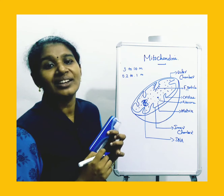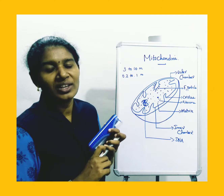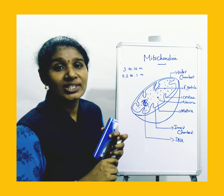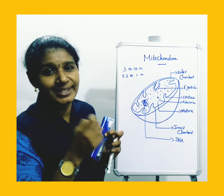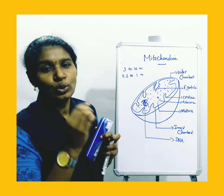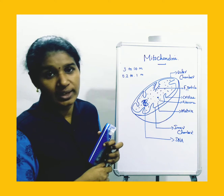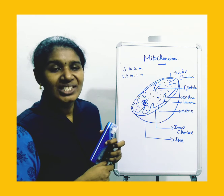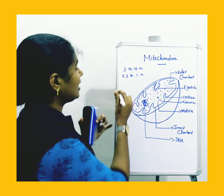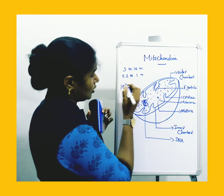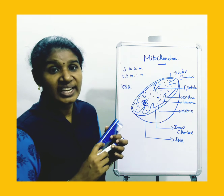The smallest mitochondria is present in the yeast cell, and the biggest mitochondria is present in the oocyte of amphibians — that is, the egg cell. Mitochondria was first described by Flemming and Colica in the year 1882.